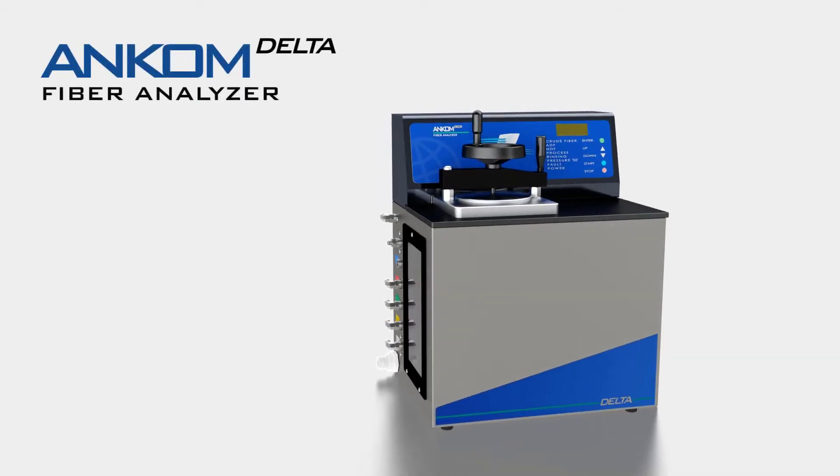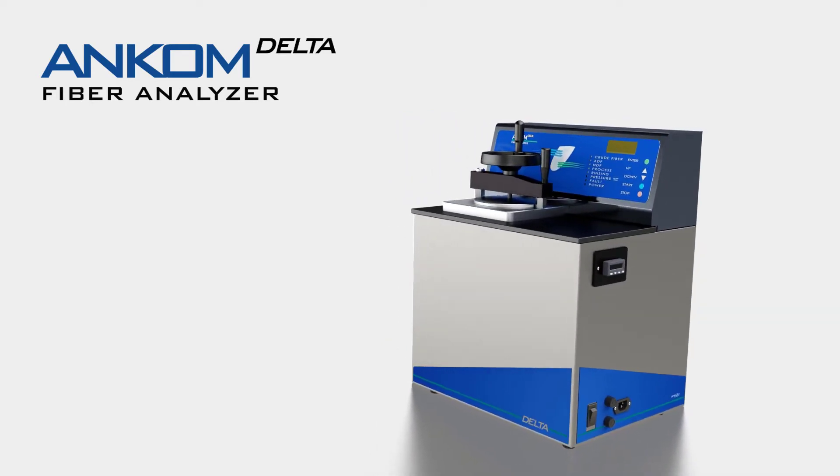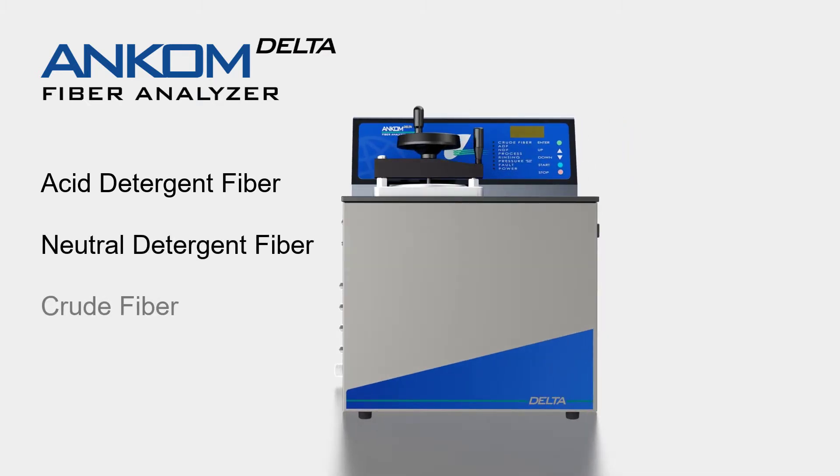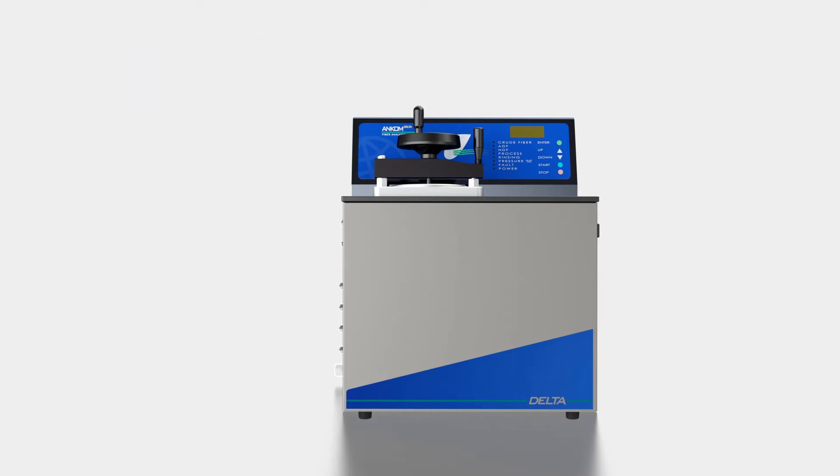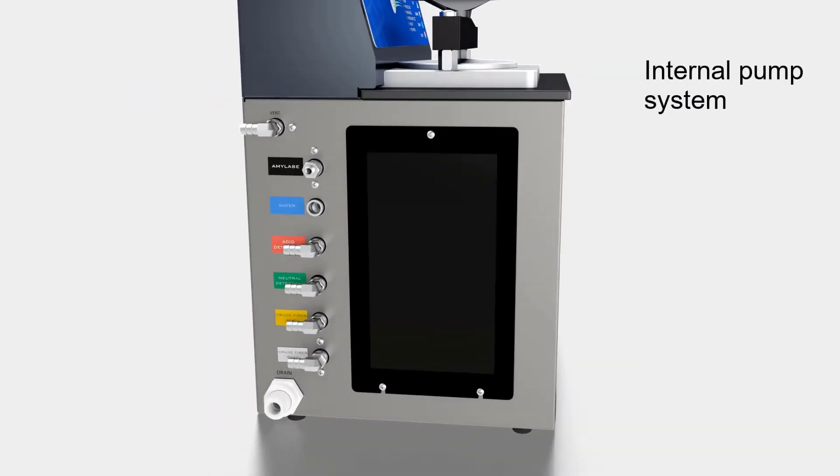The Ancom Delta fiber analyzer provides an automated, easy-to-use method for determining acid detergent fiber, neutral detergent fiber, and crude fiber values in feeds and forages. The Delta achieves automation at the highest level with an internal pump system.